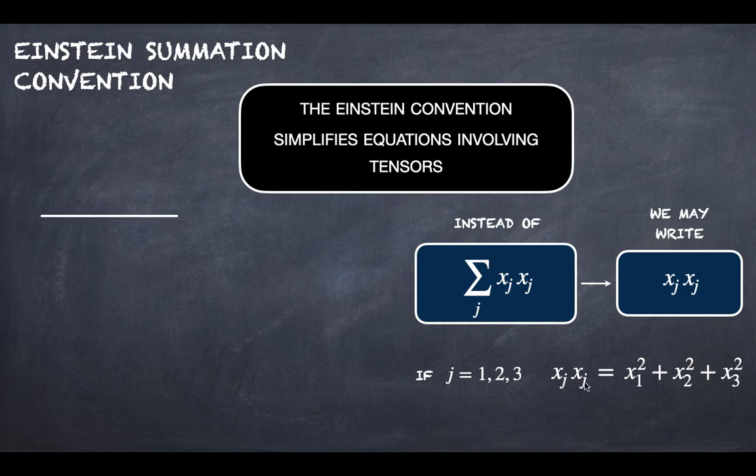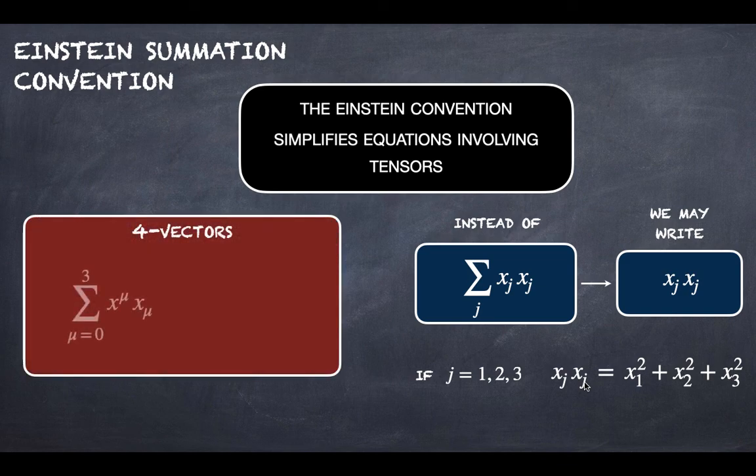The Einstein convention is very useful in the four-vectors. So when you need to distinguish between contravariant and covariant vectors, then this term here, the product of xμxμ for μ from 0 to 3, instead of writing this you may write only this.